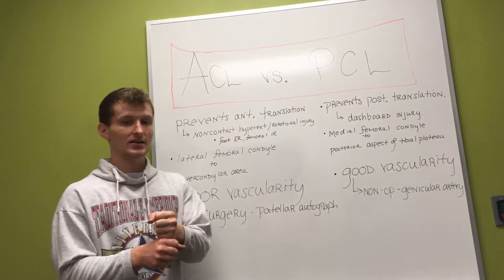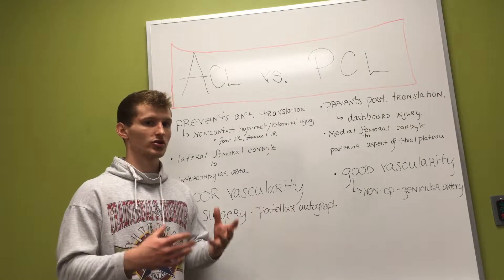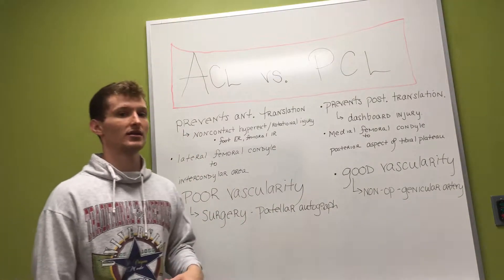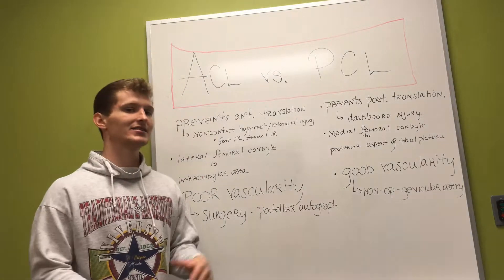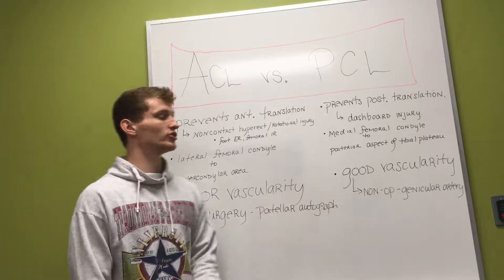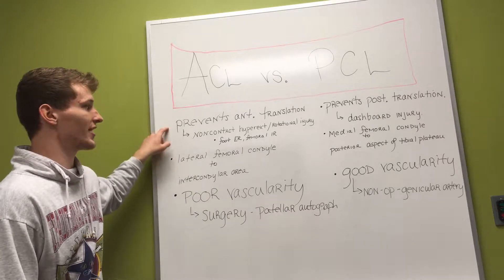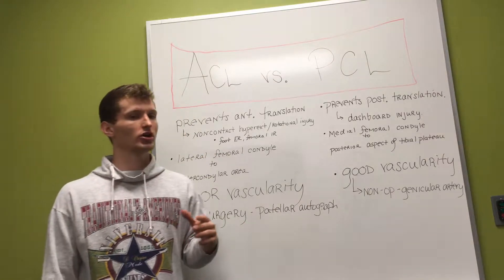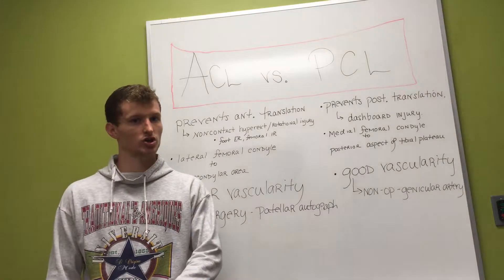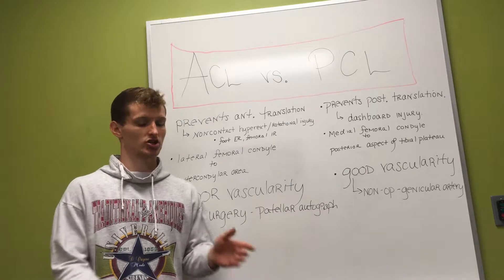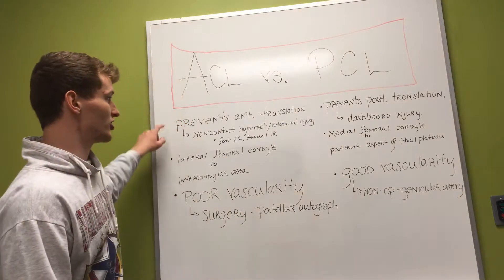So knowing that's what the ACL does, its purpose in our knee joint, we need to get into the method of injury. How are people injuring this ligament during athletics or functional activities? Typically it's a non-contact injury, meaning nobody came in contact with the knee causing this hyperextension or rotational injury. Hyperextension means the knee extended back past its anatomical limit. A rotational injury means the tibia and femur were rotating in opposite directions — your toes facing out while your thigh bone faces in — causing a shear force on the ACL.